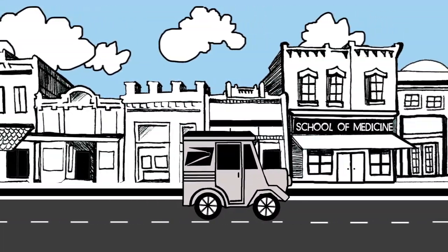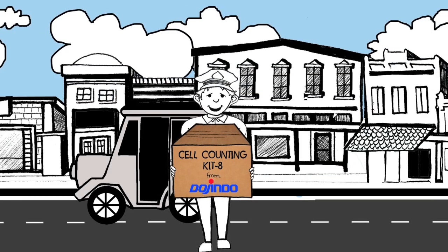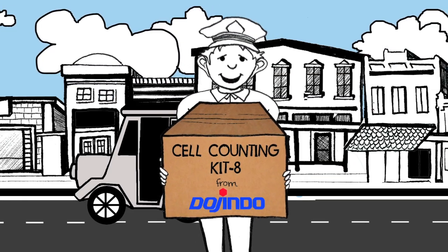Dogindo Cell Counting Kit 8 is a ready-to-use one-bottle solution. Add, incubate, measure absorbance.